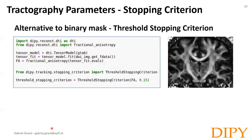To do so, you need first to compute the diffusion map — in this case, the fractional anisotropy map derived from the diffusion tensor model. Then use it to create the threshold stopping criteria, which can later be used in the local tracking function as we did earlier.